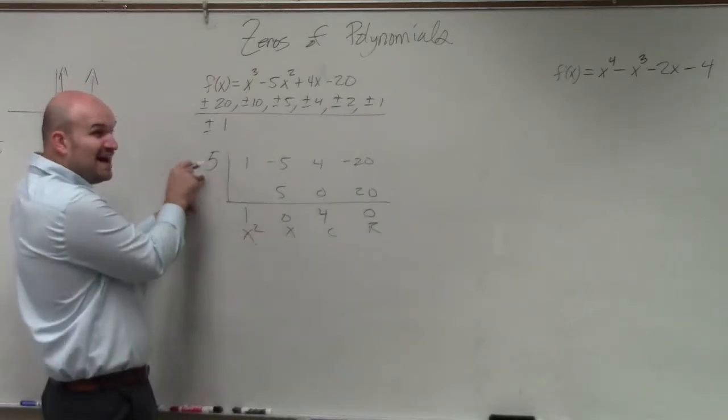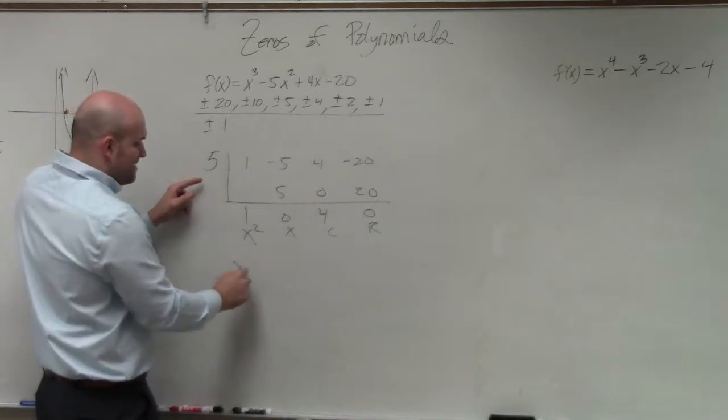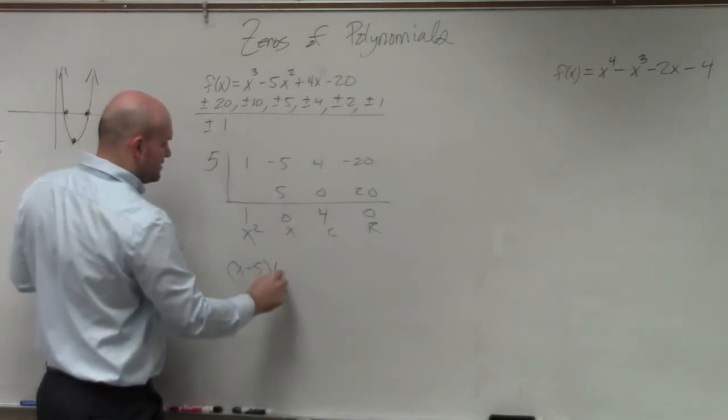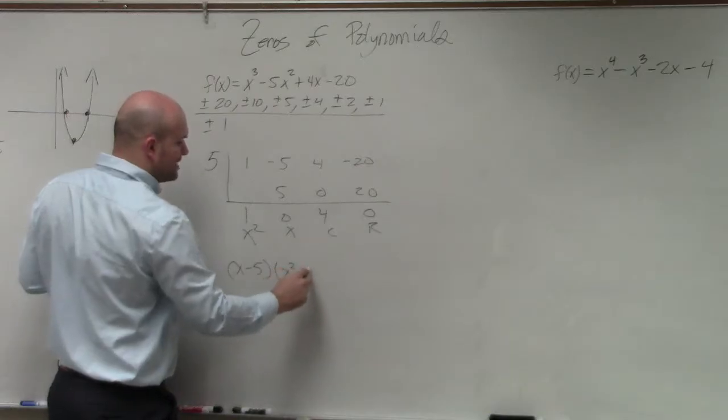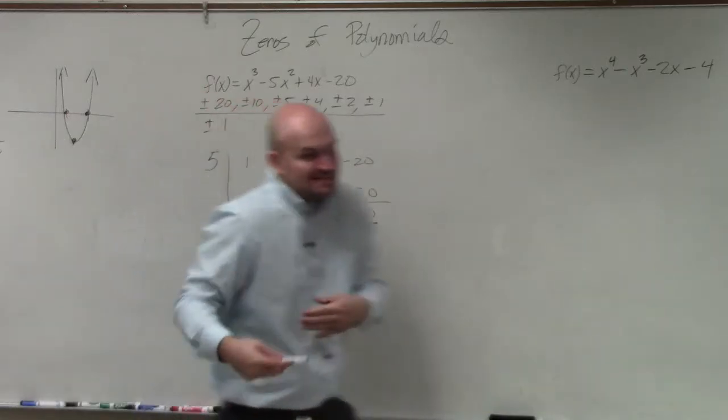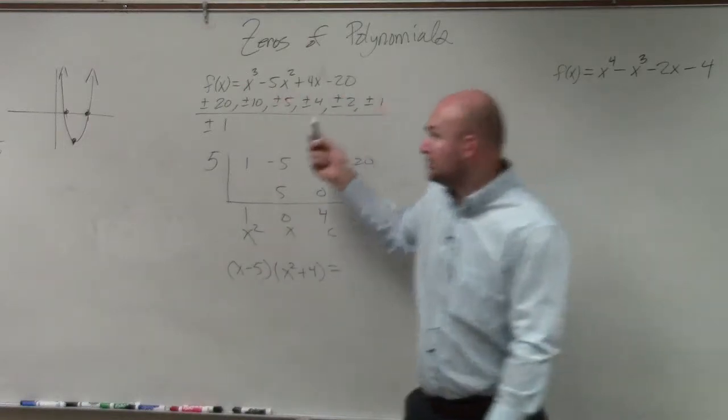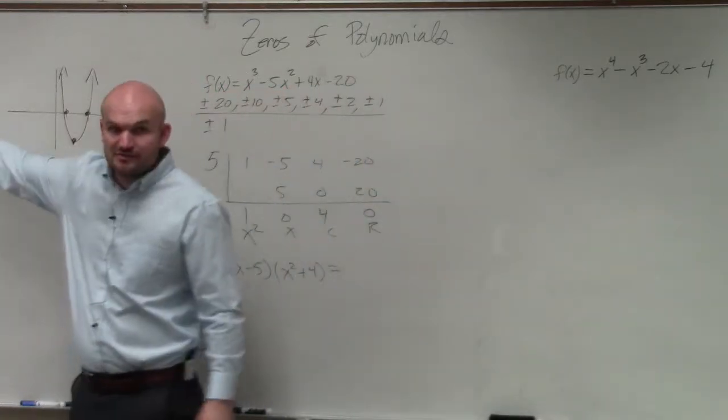So therefore, if 5 is a zero, that means x minus 5 is my factor. And then this is my other factor, which is x squared plus 4. And then remember, that times that, this times this gives me my original polynomial, just like 3 times 2 gives me 6.